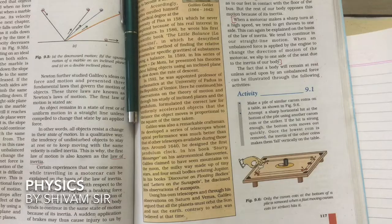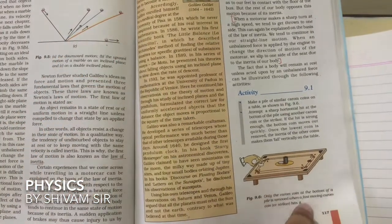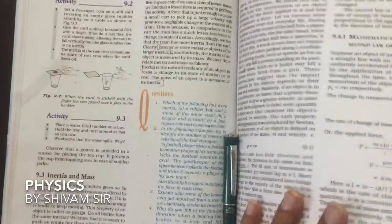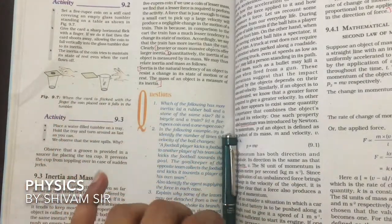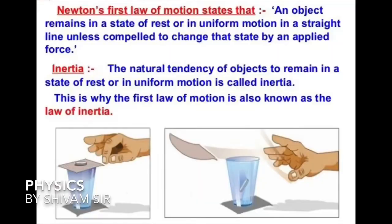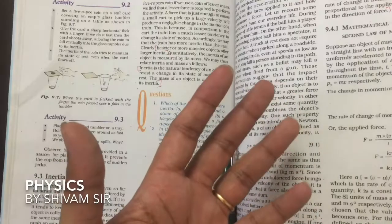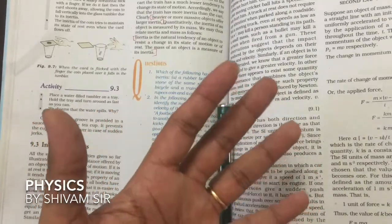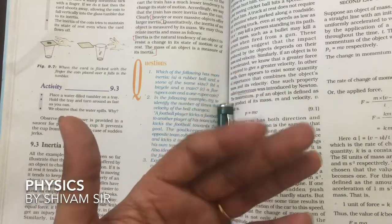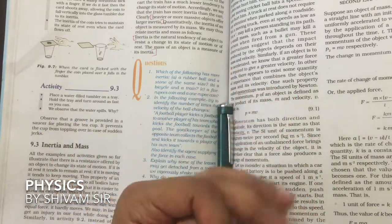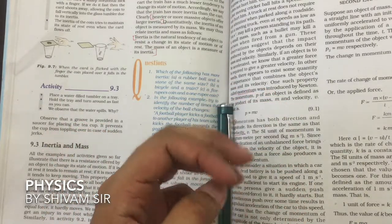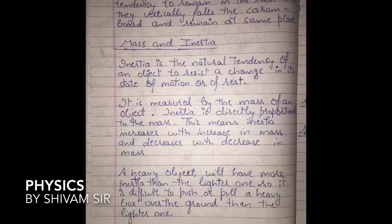Now let's discuss mass and inertia from Newton's First Law of Motion. Inertia is the natural tendency of anybody to resist a change in its state of motion or of rest. If a body is at rest it will remain at rest; if in motion it will remain in motion. Inertia is measured by the mass of an object — inertia is directly proportional to mass. Inertia increases with increase in mass and decreases with decrease in mass.